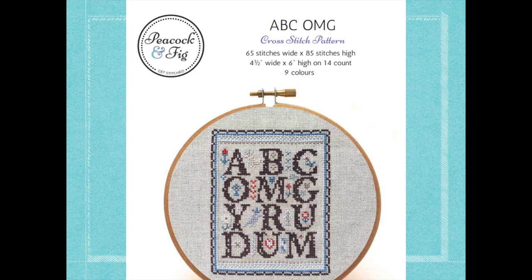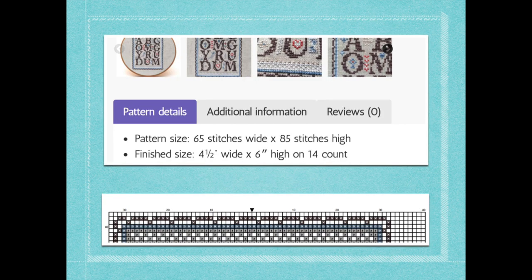On some patterns it will have the stitch count and the stitched area measurement for you right there, so you don't have to do as much calculation. For some it will just say the number of stitches because they don't want to assume what thread count of fabric you're going to be using — some people prefer stitching on a very high thread count because you get more stitching in a smaller area. You can also see images from my website where I've listed the pattern size at 65 stitches wide, 85 stitches high, and 4.5 inches wide by 6 inches high on 14-count. This is what I do on all of my patterns — I have it on the listing and on the pattern cover.